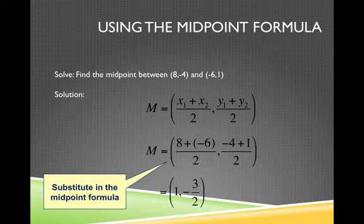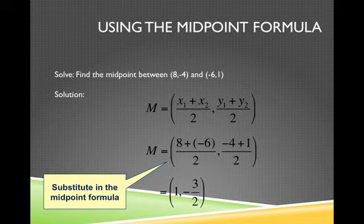I simplify the x-coordinate. So I get 8 plus negative 6, which is 2, divided by 2 gives me 1. And then on the y side, I have negative 4 plus 1, which is negative 3, divided by 2 gives me negative 3 over 2. And so this point (1, -3/2) is the point in the middle between our original two points or coordinates. It's the midpoint.